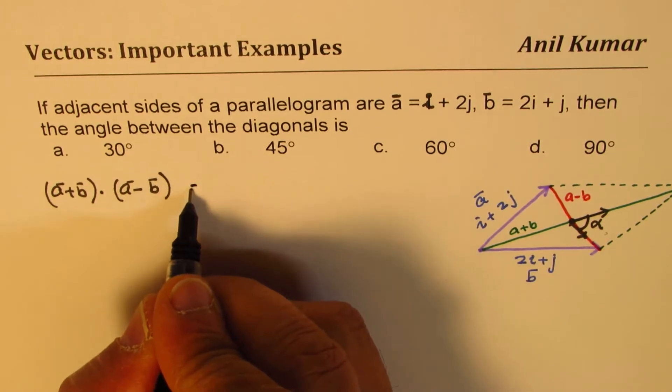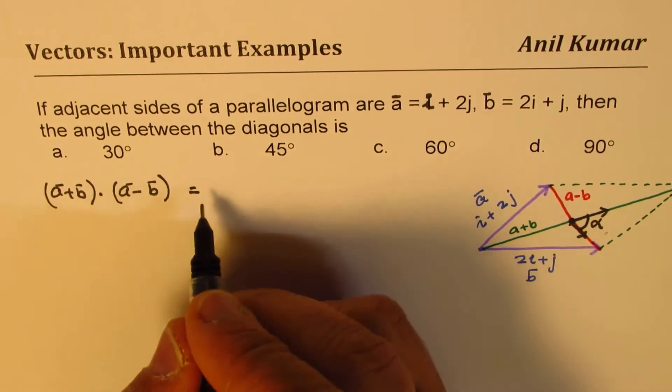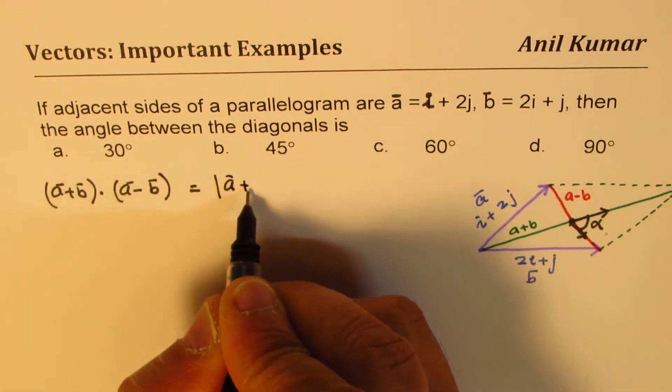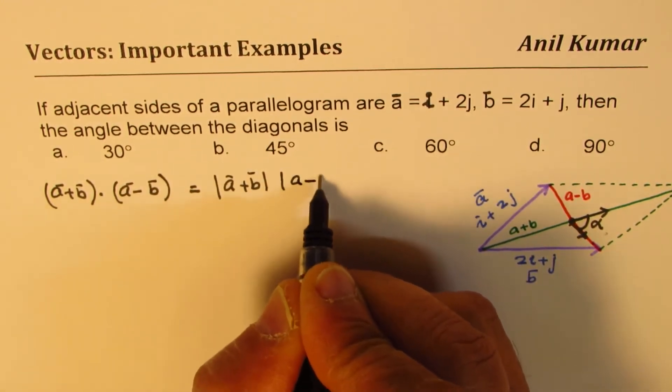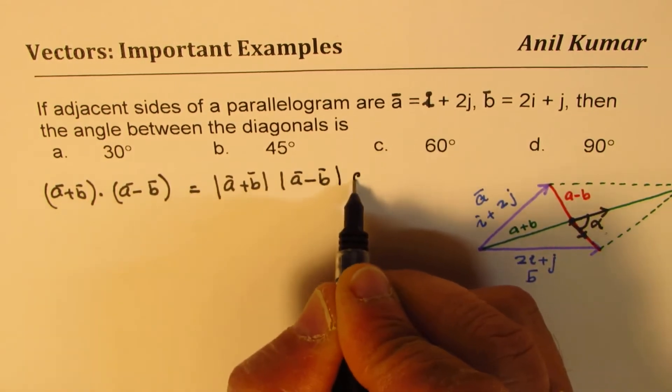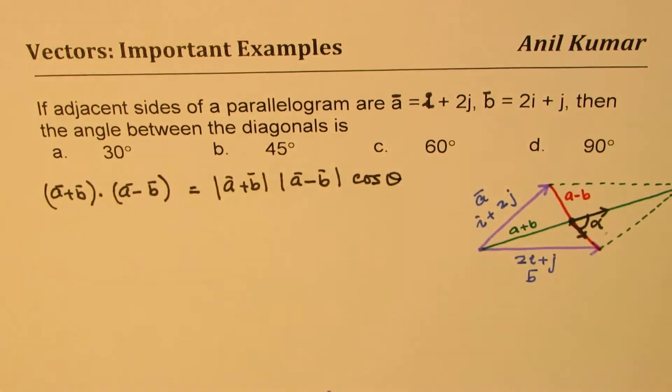So from here by rearranging we can get cosine theta. So we get cos θ as equal to the dot product of these (a + b) · (a - b) divided by their magnitudes, times |a - b|. That is what will give us the answer.